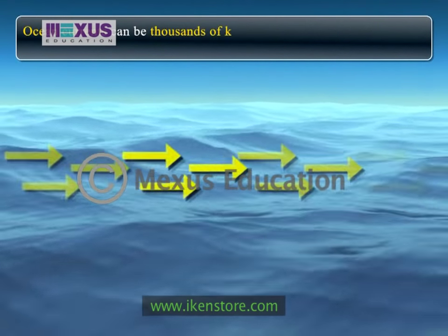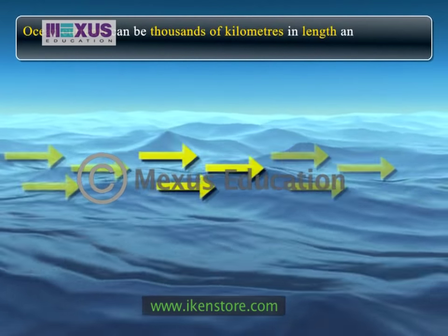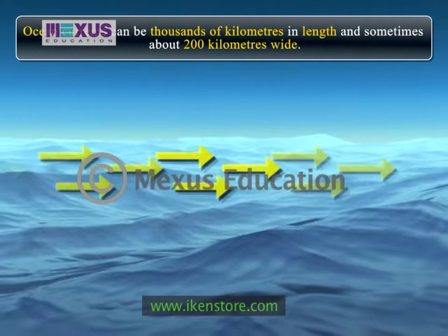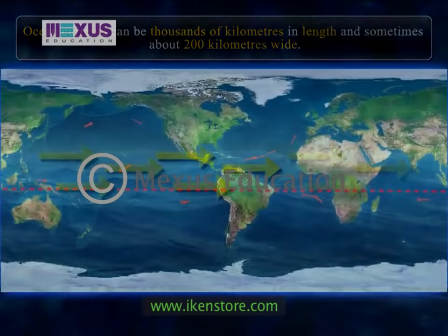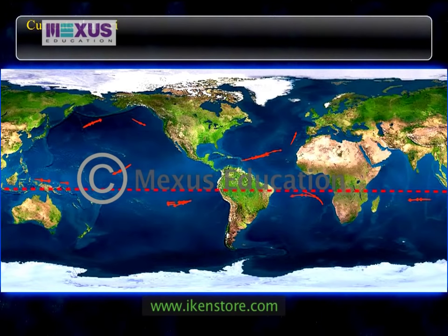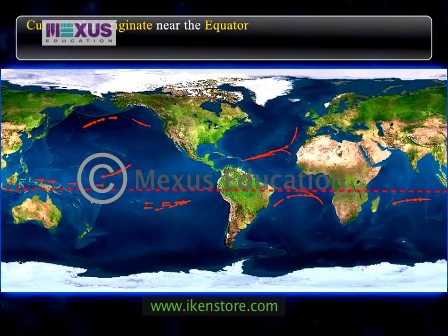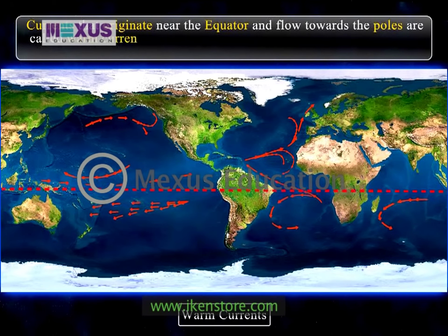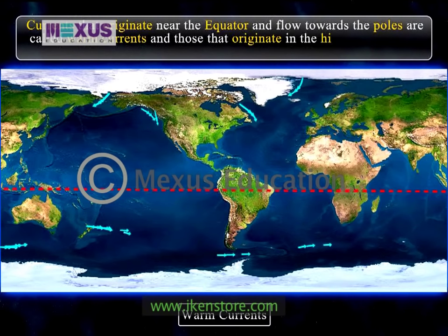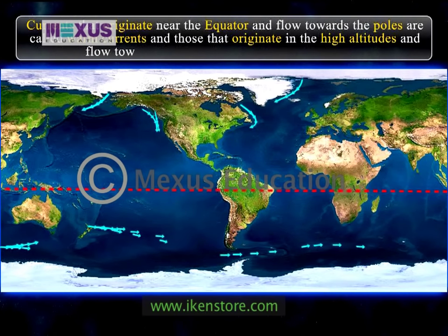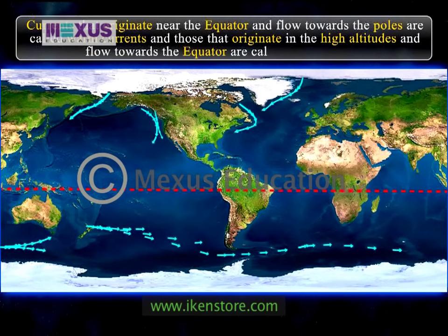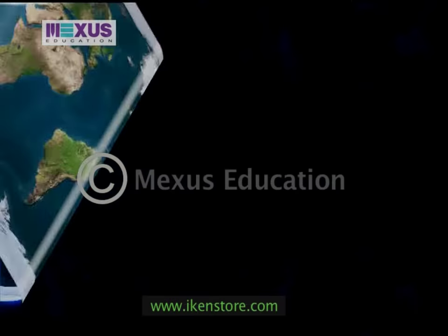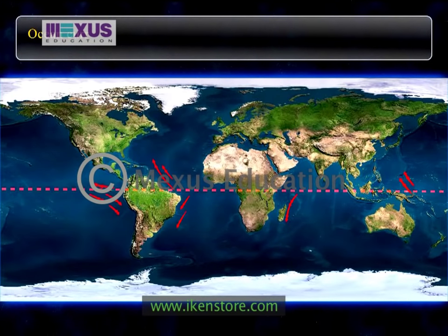Ocean currents can be thousands of kilometers in length and sometimes about 200 kilometers wide. Currents that originate near the equator and flow towards the poles are called warm currents, and those that originate in the high altitudes and flow towards the equator are called cold currents.